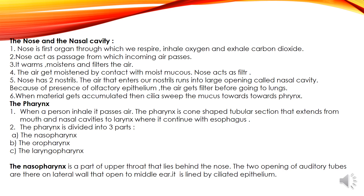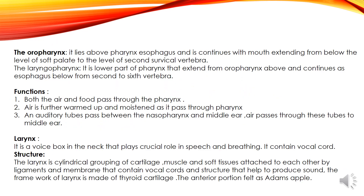The pharynx: when a person inhales, air passes through the pharynx. The pharynx is a cone-shaped tubular section that extends from the mouth and nasal cavity to the larynx, where it continues with the esophagus. The pharynx is divided into three parts: nasopharynx, oropharynx and laryngopharynx. The nasopharynx is the part of the upper throat that lies behind the nose. The two openings of auditory tubes are on the lateral walls that open to the middle ear. It is lined with ciliated epithelium.